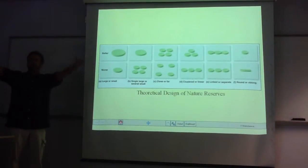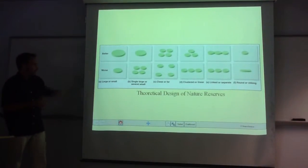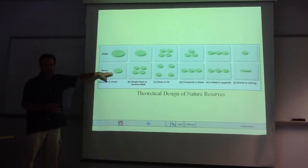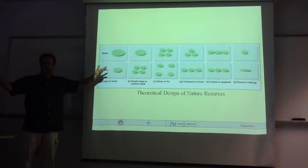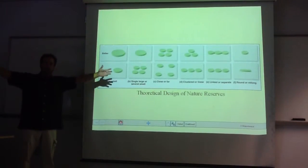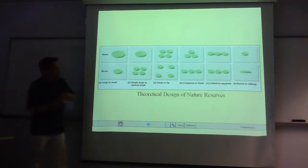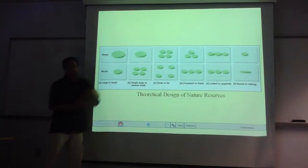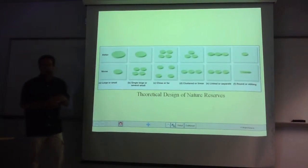If you're going to set up a preserve for a whole bunch of species that occupy an ecosystem, obviously bigger is better than smaller. Size matters. If you want to save grizzly bears, you're not going to set aside a preserve as big as this room — they're all going to die. For most species bigger is always going to be better. If you can't do big, and you could either do four little ones or one big one of the same total size, what would be better?